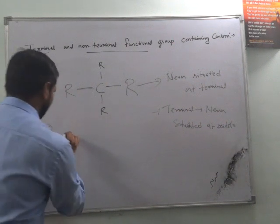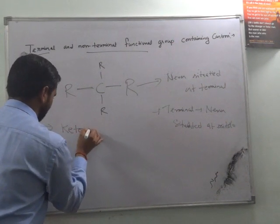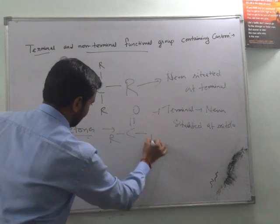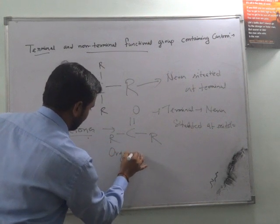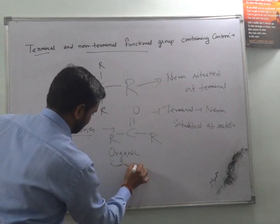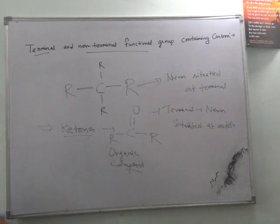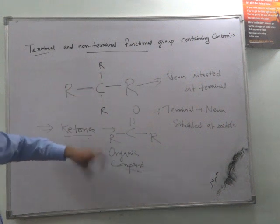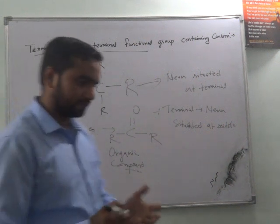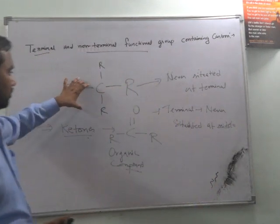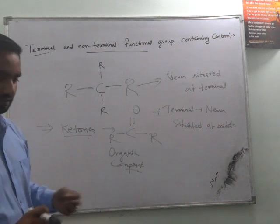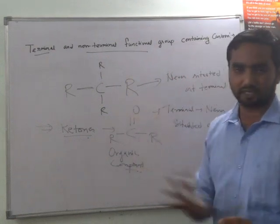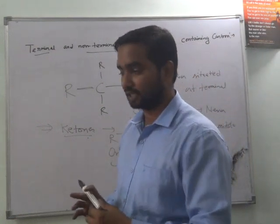Same thing happens for terminal functional groups. They are never situated at the middle. This is your non-terminal functional group. And if I take some example, for example, we have ketone. Ketone is represented by double bond O. And here, you can add anything from the organic compound. And it is always situated at the middle of the organic compound. So there is no need to get terminated in the case of ketone. The counting of carbon starts from the functional group itself.